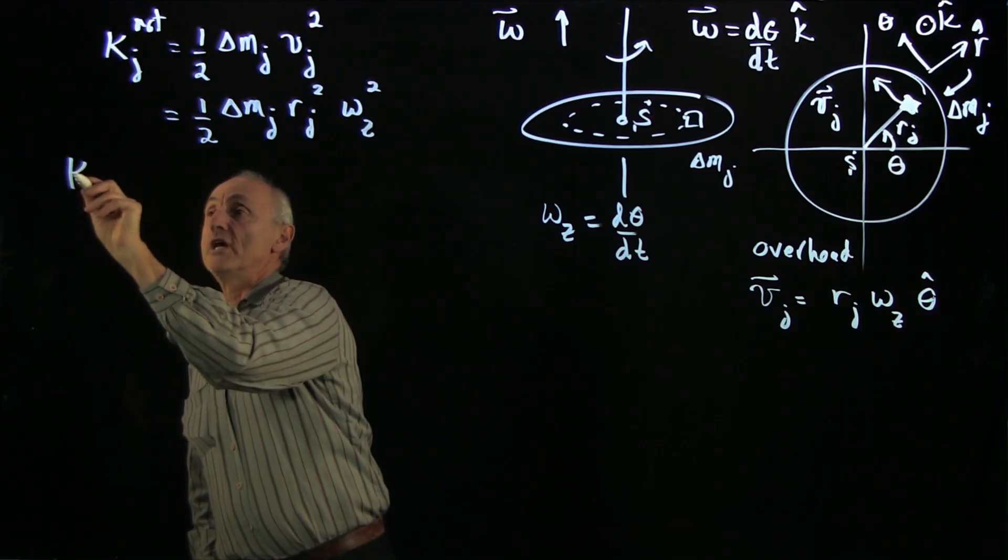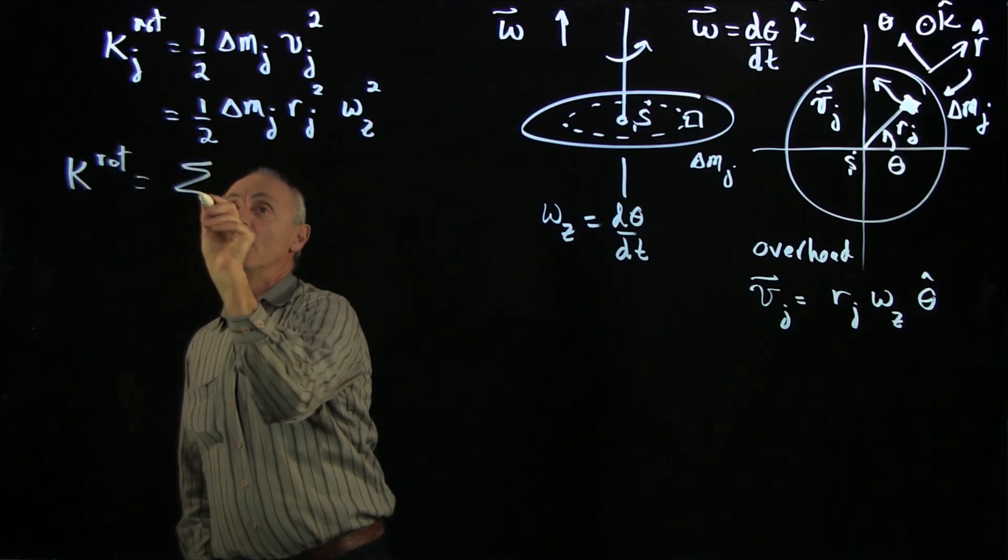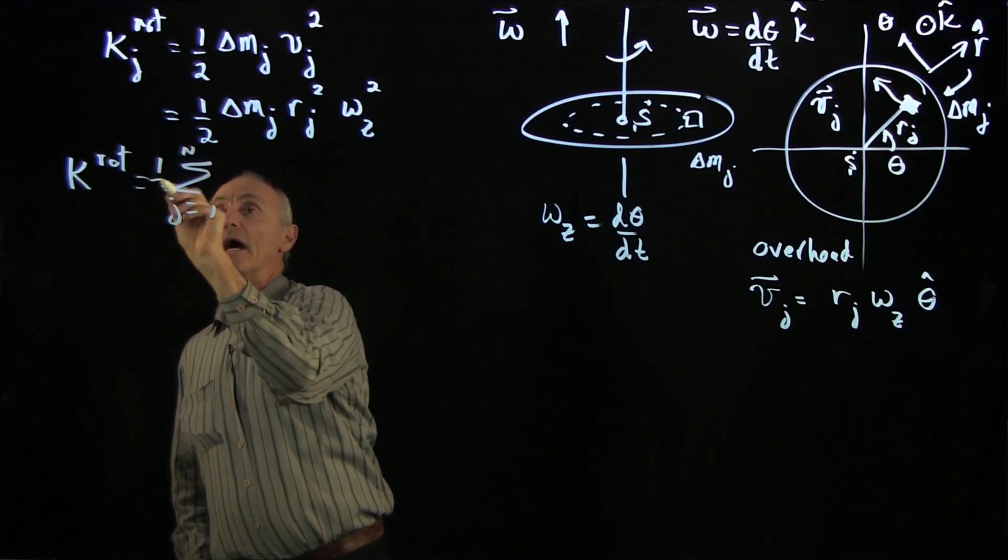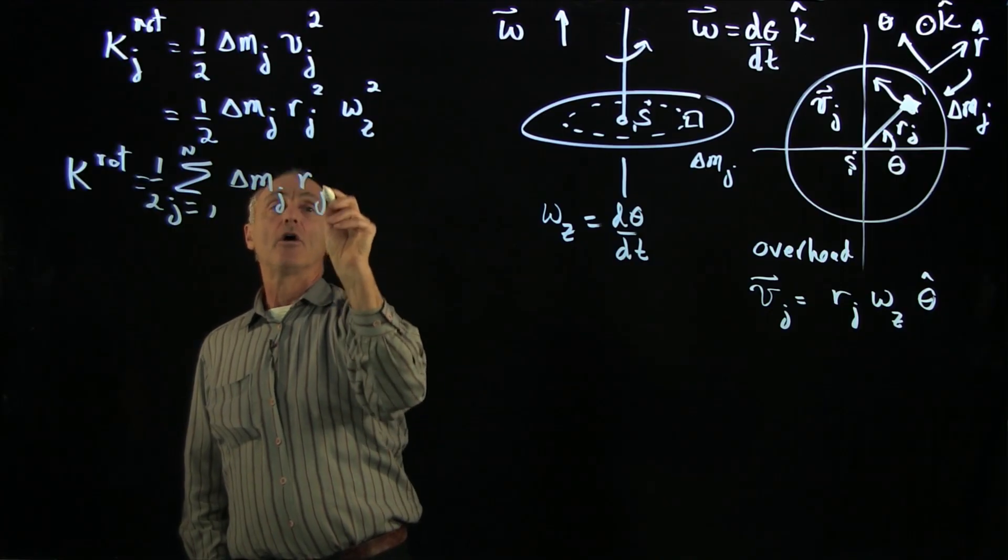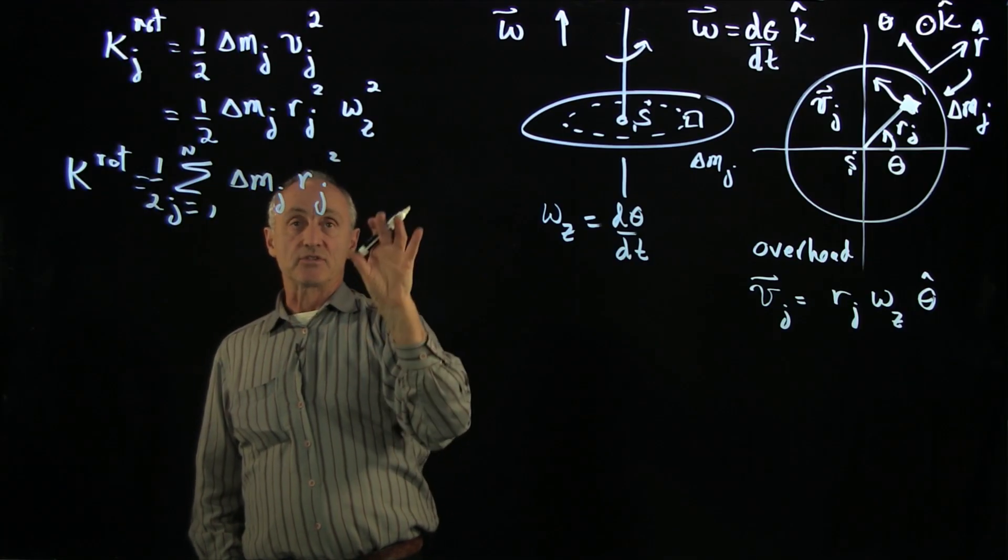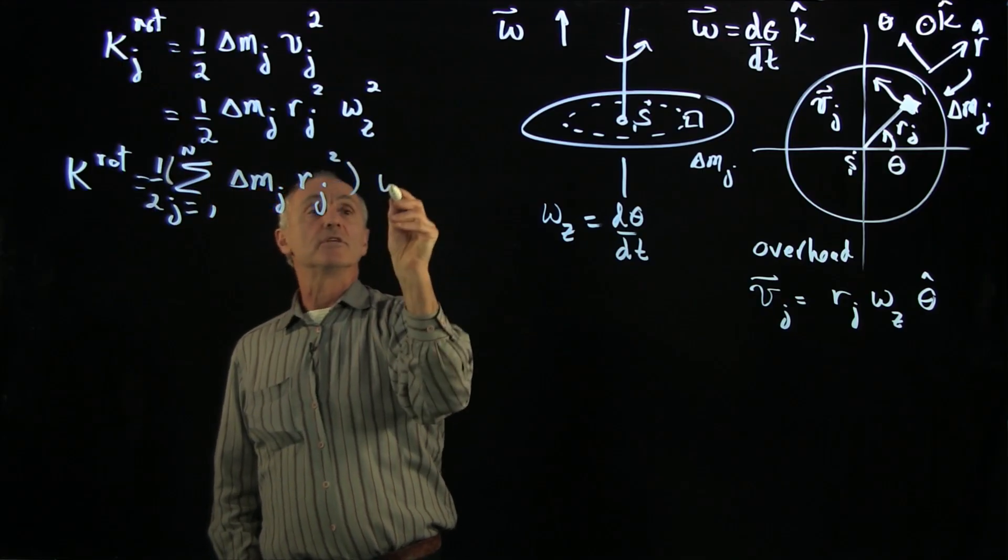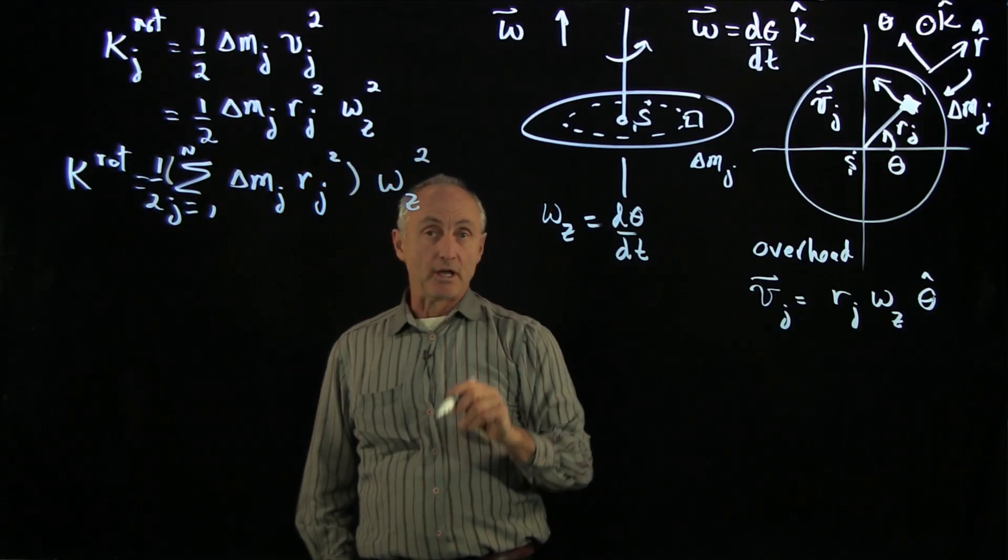So the total rotational kinetic energy is the sum over j from 1 to n of, let's put the half outside, times delta m_j r_j squared. Now again, recall that every element has the same omega_z, so I can write parentheses omega_z squared. And that's our rotational kinetic energy.